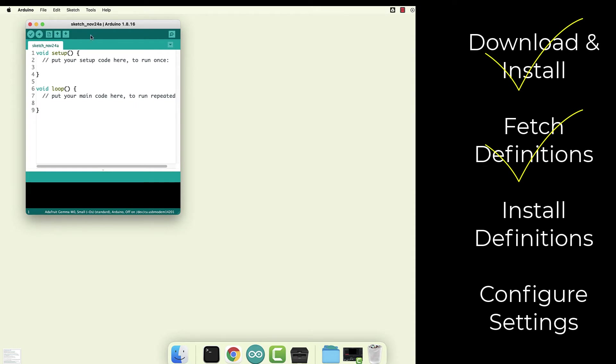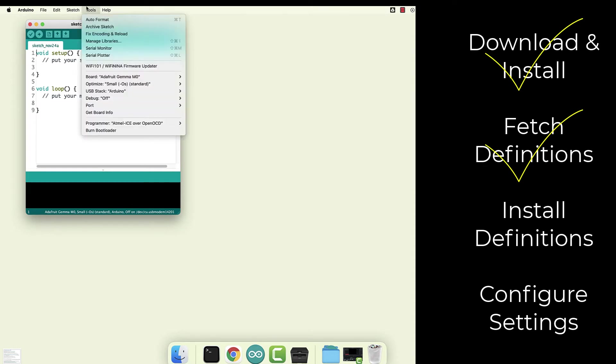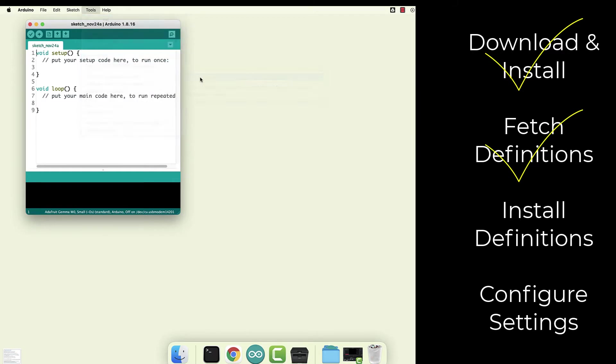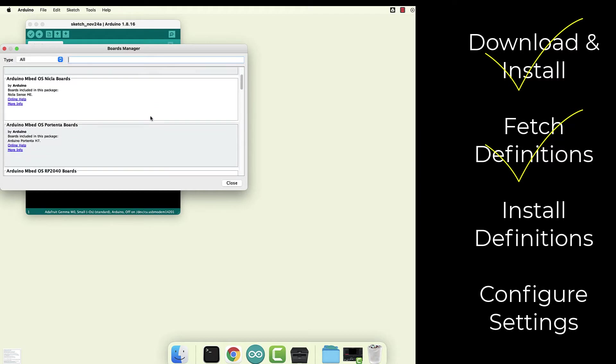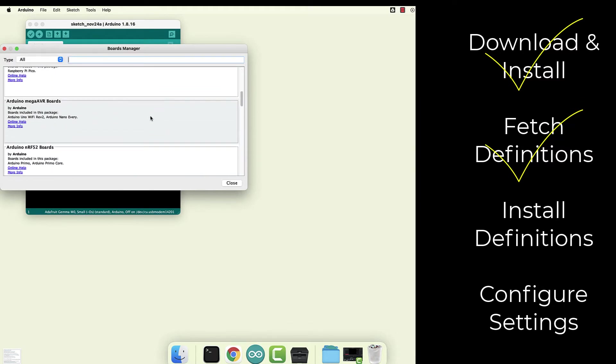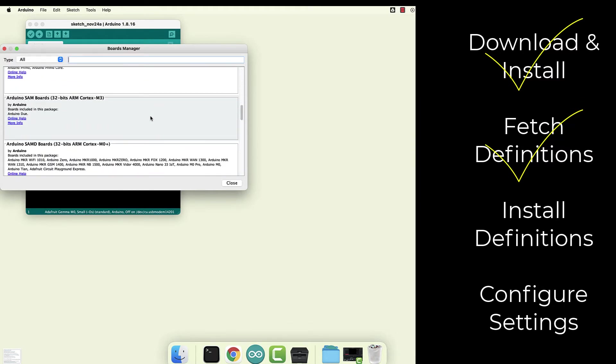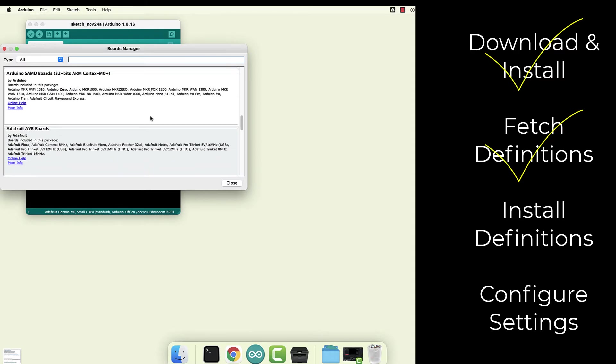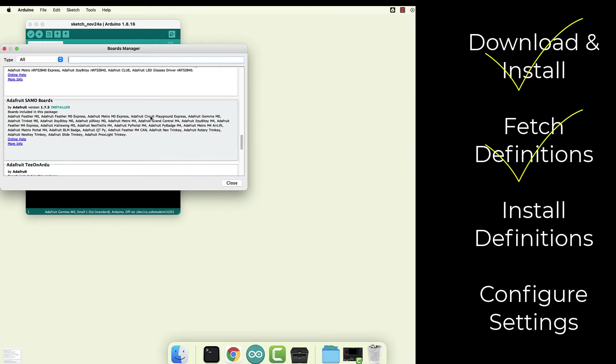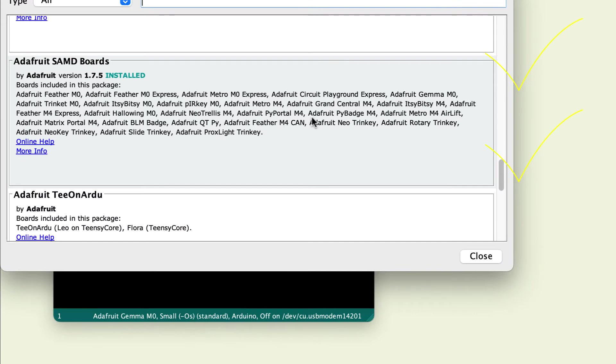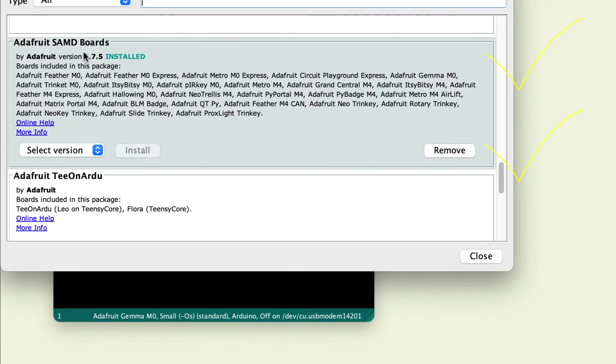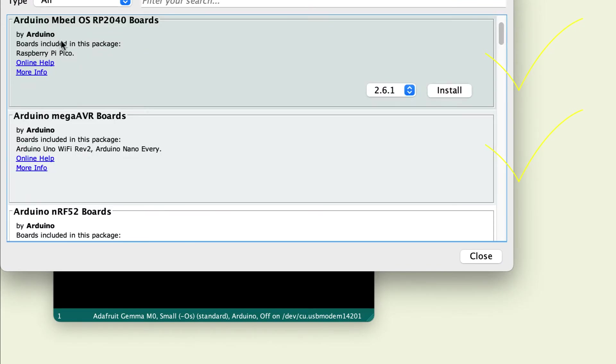Then finally, we need to install those definitions. This will be under the tools menu. Under board, there's boards manager. And it'll have this list. You're looking for Arduino SAMD boards. Sorry, Adafruit SAMD boards. They're both in there, so be sure you've got the right one. Here it is, Adafruit SAMD boards.